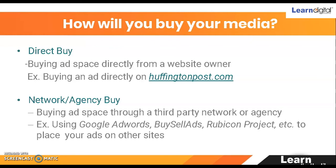Next is goals and budgeting - make sure you select a proper goal and select the proper budget and bidding options. Different platforms can help you do all these things. And finally, how and from where you will buy the media: if you want direct buy, you can contact the website owner directly - for example Hotstar or Times of India. If you're looking for network or agency buy, you can buy space through a third-party network. For example, Google Ads has their Display Network, Facebook has Facebook Audience Network, LinkedIn has LinkedIn Audience Network, and there are networks like BuySellAds and Rubicon Project with many options available.